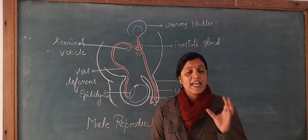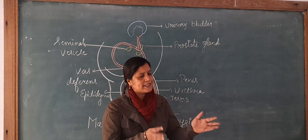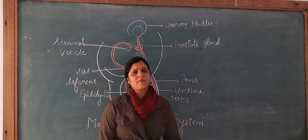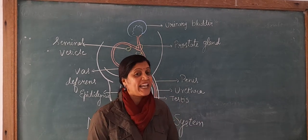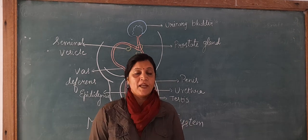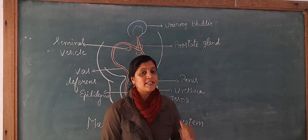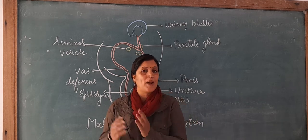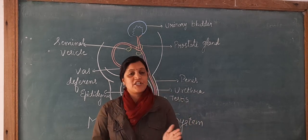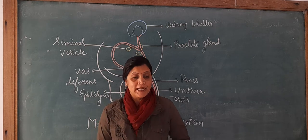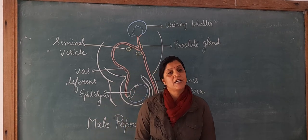At the age of puberty — when the reproductive system gets developed in males and females — that age is known as puberty. In girls, this age is nearby 10 to 12 years, and in boys this age is near 13 to 14. That means a girl's puberty age is a little bit earlier.